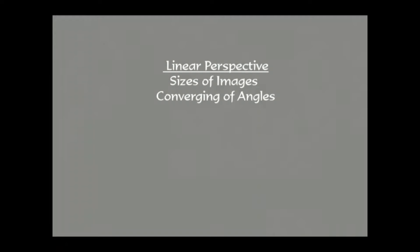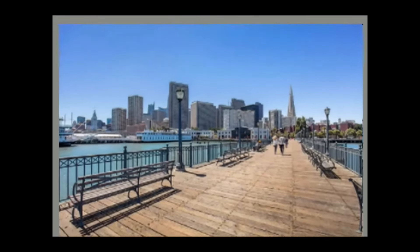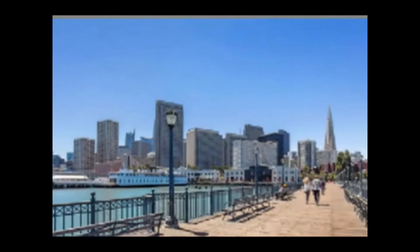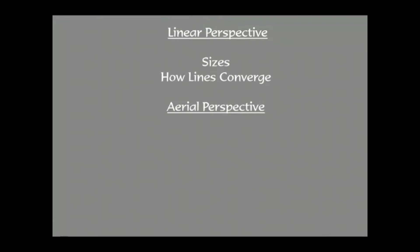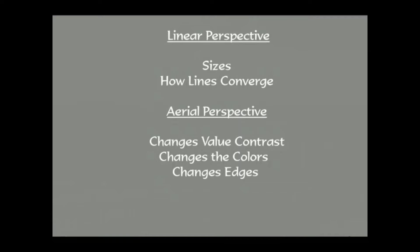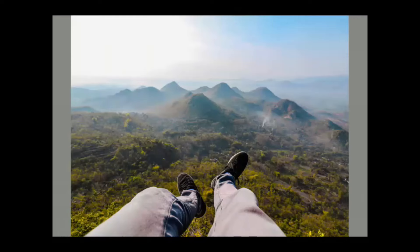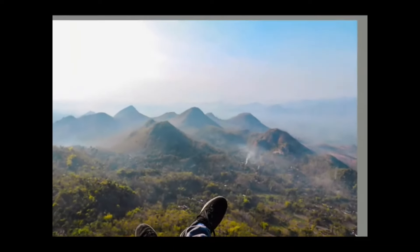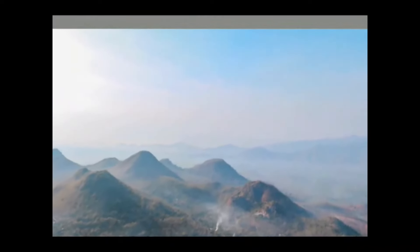Whereas linear perspective deals with sizes, convergence, and things growing smaller as they move into the distance, aerial perspective does something totally different. Aerial perspective will change the value contrast of the image, change the color of the image, and change the degree of sharpness of the edges — in other words, it makes those images blurred. The further we see into the distance, the less of the image we can discern. There reaches a point in distance where, because of the particles in the atmosphere, that image will totally disappear.